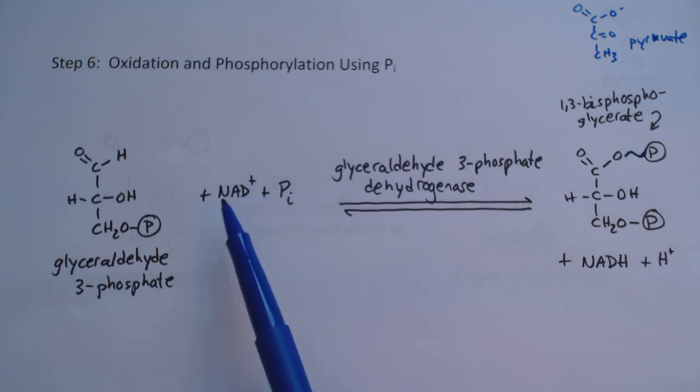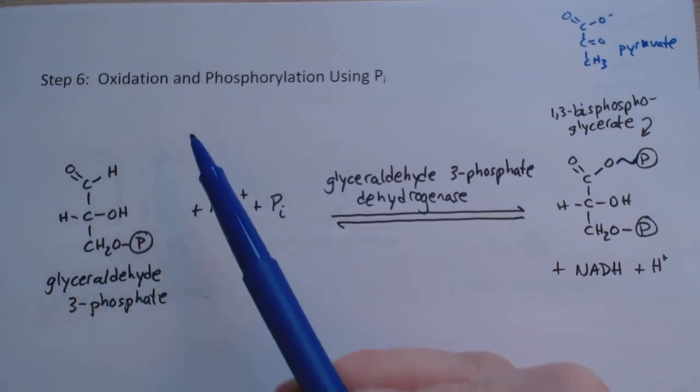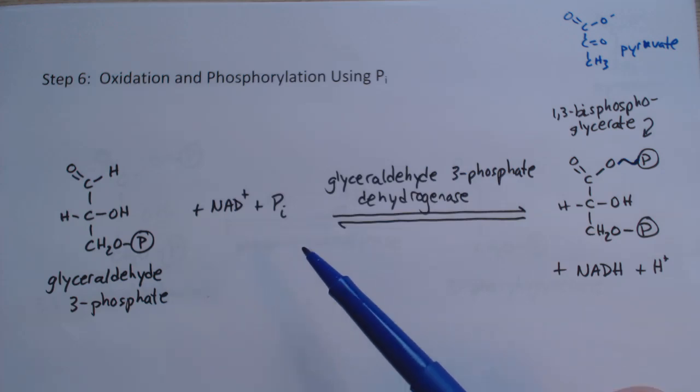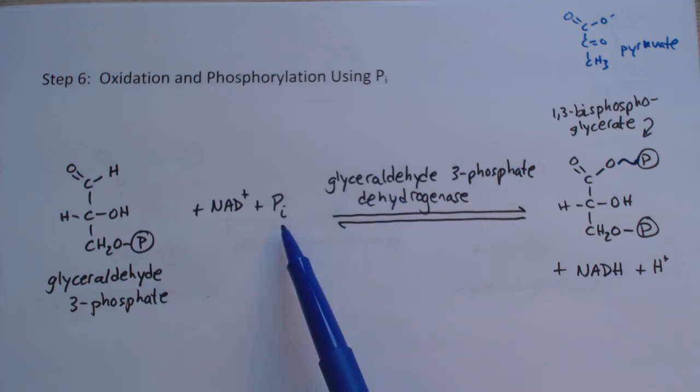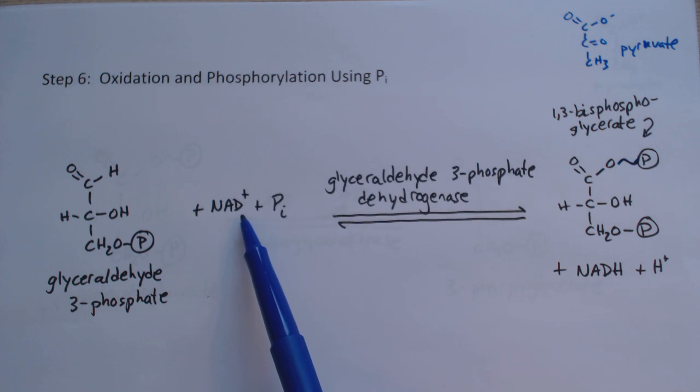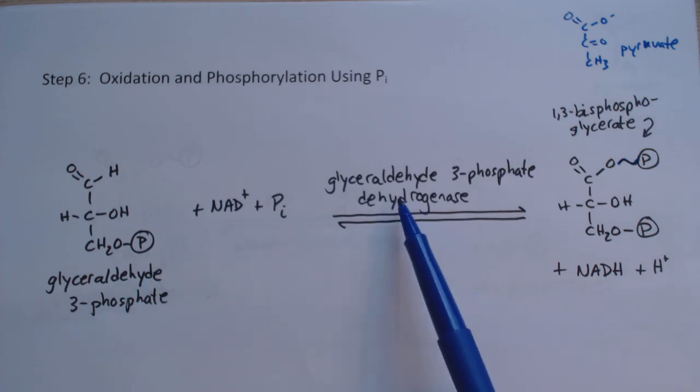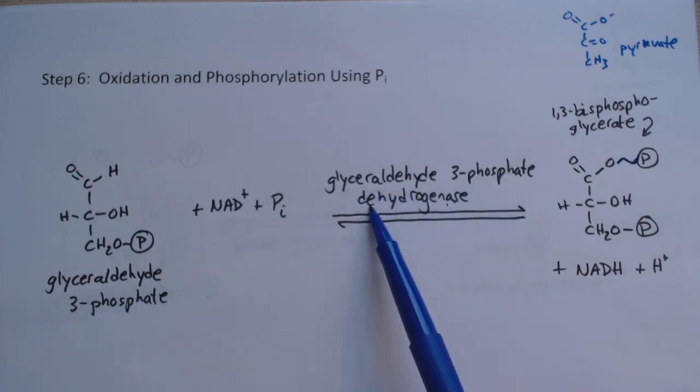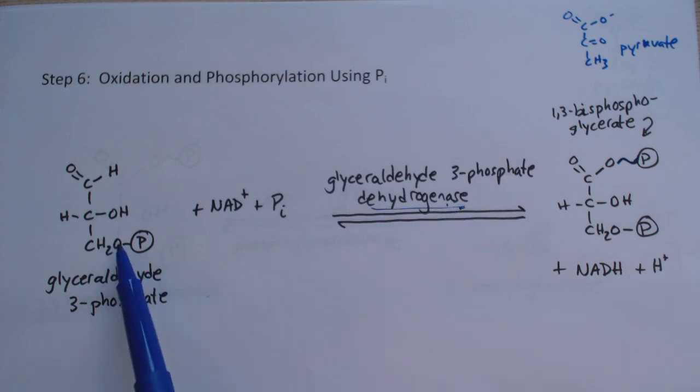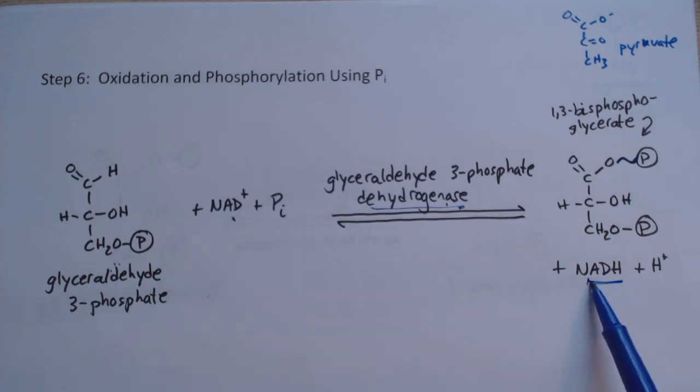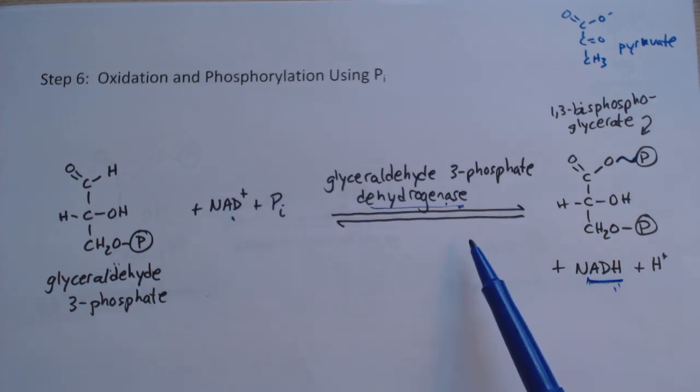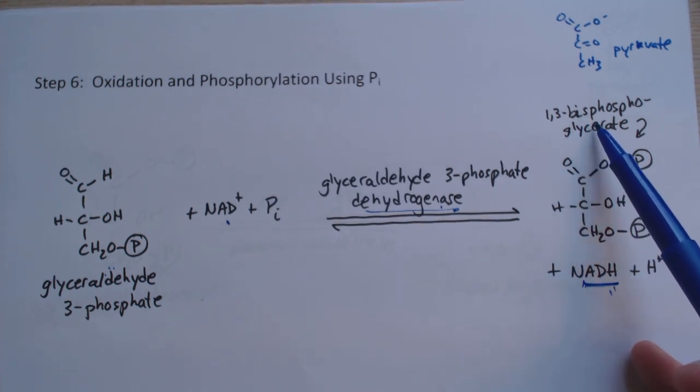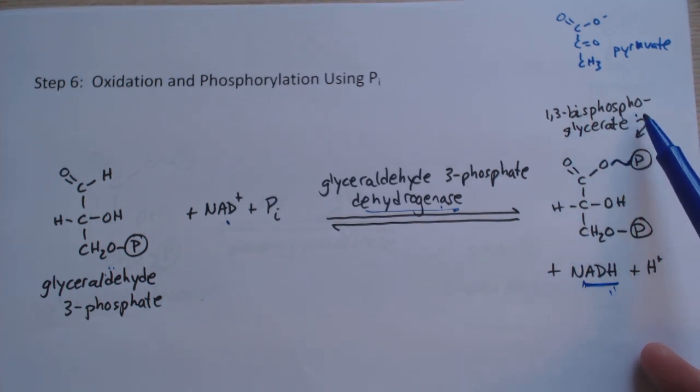Step 6 is an important step - the oxidation and phosphorylation using phosphate. We have inorganic phosphate ion and NAD+ in the oxidized form, so it's going to be reduced, which means it's going to oxidize this group. The enzyme glyceraldehyde-3-phosphate dehydrogenase - if we're taking hydrogens away, we're oxidizing it. NAD+ gets reduced, and we've created 1,3-bisphosphoglycerate.